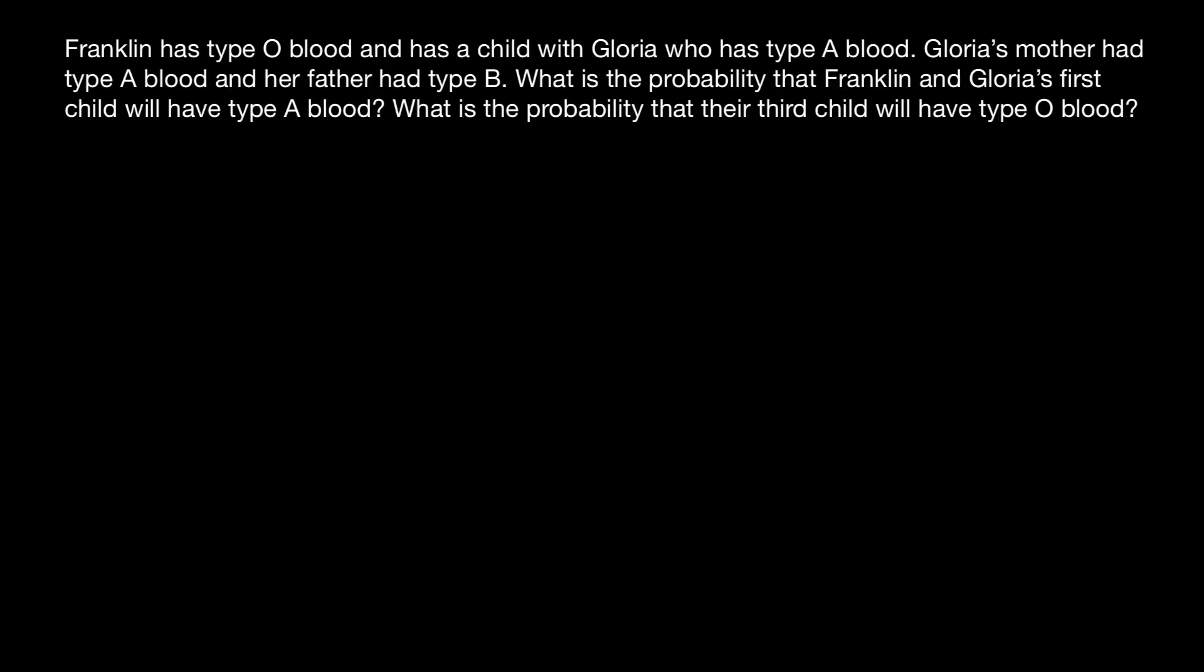Hello and welcome to Nikolai's genetics lessons. Today's problem is Franklin has type O blood and has a child with Gloria who has type A blood. Gloria's mother had type A blood and her father had type B. What is the probability that Franklin and Gloria's first child will have type A blood? What is the probability that the third child will have type O blood?